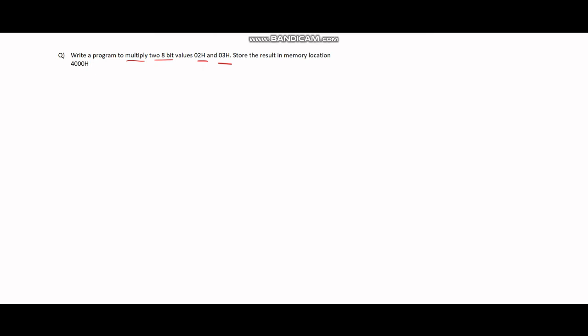Since we don't have any instruction like MUL in 8085, we solve this using addition. But how do we do this? Basically, 2 times 3 is equivalent to addition of the value 2, 3 times, or it's equivalent to addition of the value 3, 2 times.